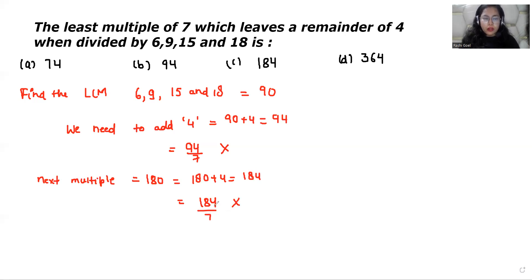So 180 is also not the number. Next multiple is 270. Again, if I add 4, 270 plus 4 is 274. And if I divide it by 7, it's not completely divided.